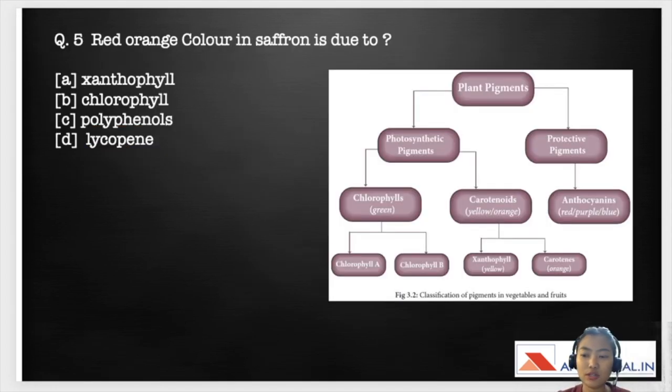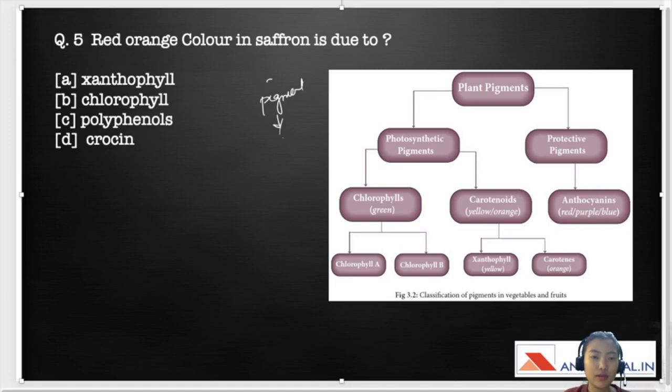The fifth question here is based on the pigment. The pigments are nothing but just molecular structures which are present in the plastids of this plant cell wall and this imparts a color to the fruits or the vegetables. The red-orange color in saffron is due to A. Xanthophyll, B. Chlorophyll, C. Polyphenols, and D. Crocin.